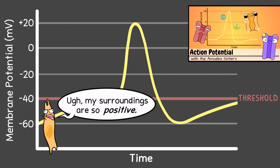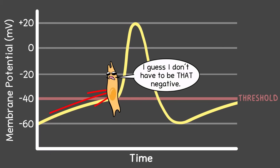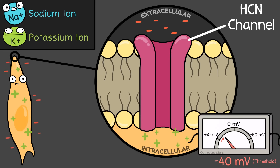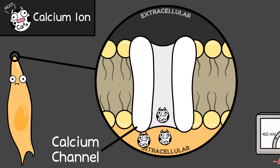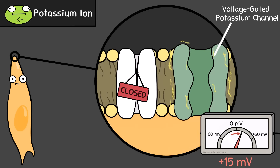A reminder: when cells are getting depolarized, the difference in electrical potential between the inside and outside of the cell is lessening — the cell is becoming more positive. If the pacemaker cells in the SA node reach a threshold of around negative 40 millivolts, the action potential can happen, and depolarization really ramps up. Calcium channels open to allow calcium to rush into the pacemaker cells, and membrane potential goes from negative 40 millivolts to around positive 15 millivolts.